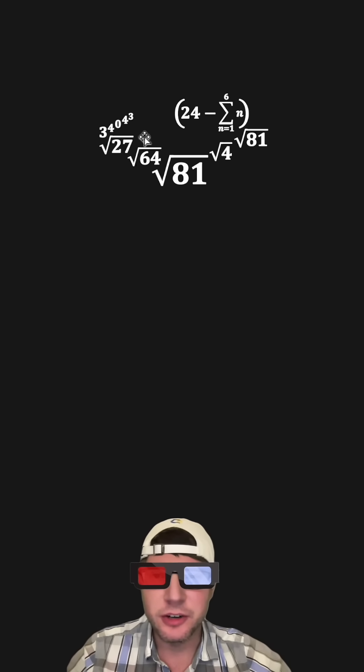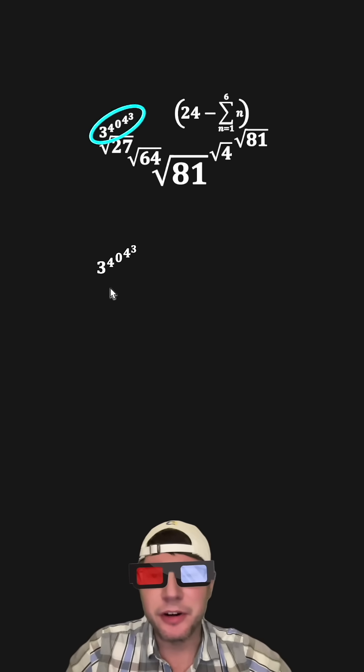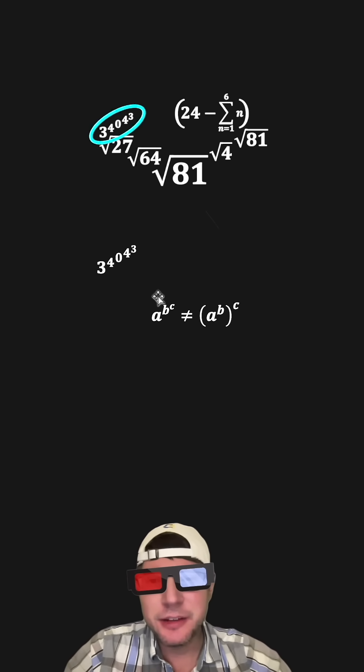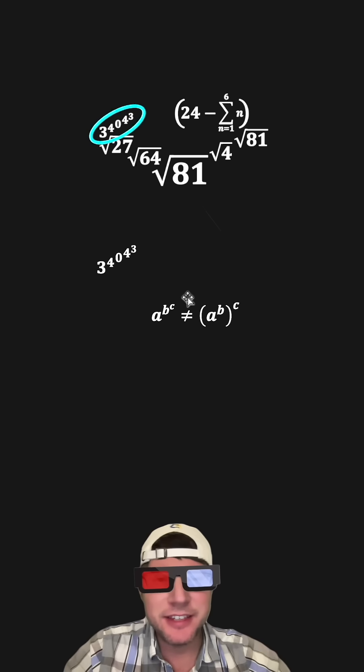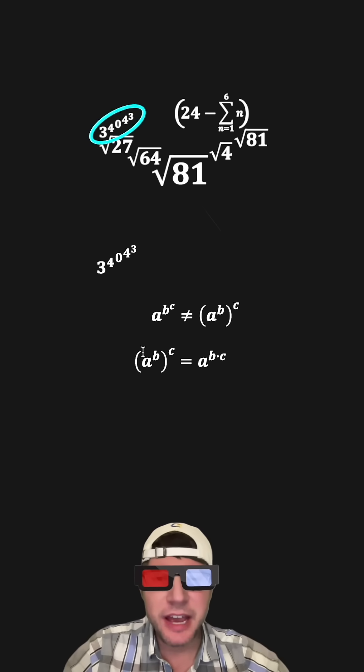So where do we even start? Let's go from left to right. Let's start with this right here. This is a power tower, it's 3 to the 4 to the 0 to the 4 to the 3. A power tower like A to the B to the C is not the same thing as A to the B whole thing to the C. If you ever have A to the B whole thing to the C, you multiply the exponents.